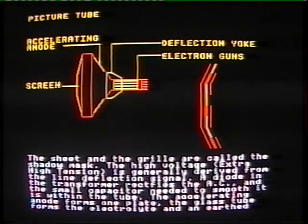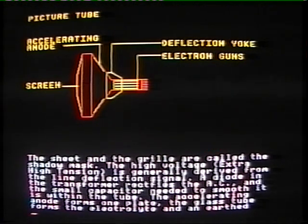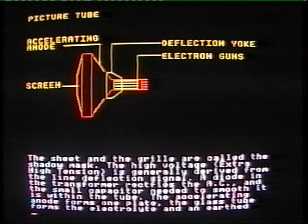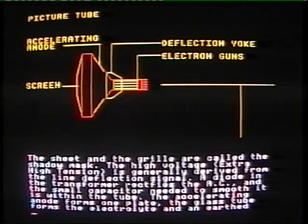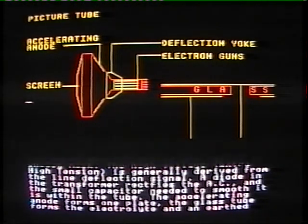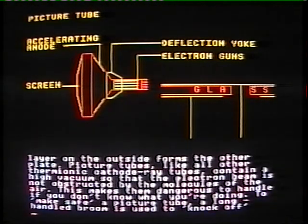The high voltage is generally derived from the line deflection signal. A diode in the transformer rectifies the AC, and the small capacitor needed to smooth it is within the tube. The accelerating anode forms one plate, the glass tube forms the electrolyte, and an earthed layer on the outside forms the other plate.